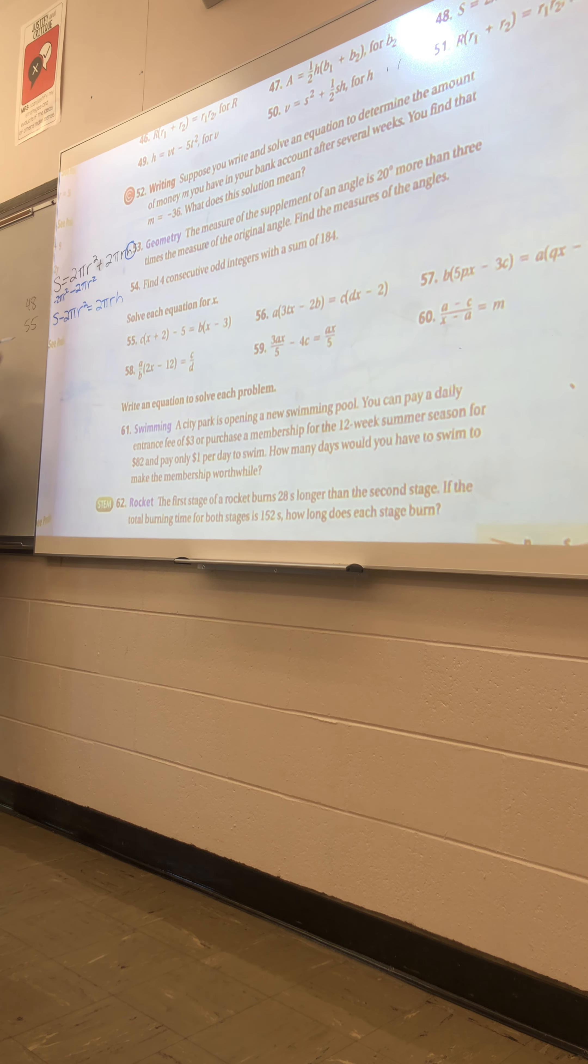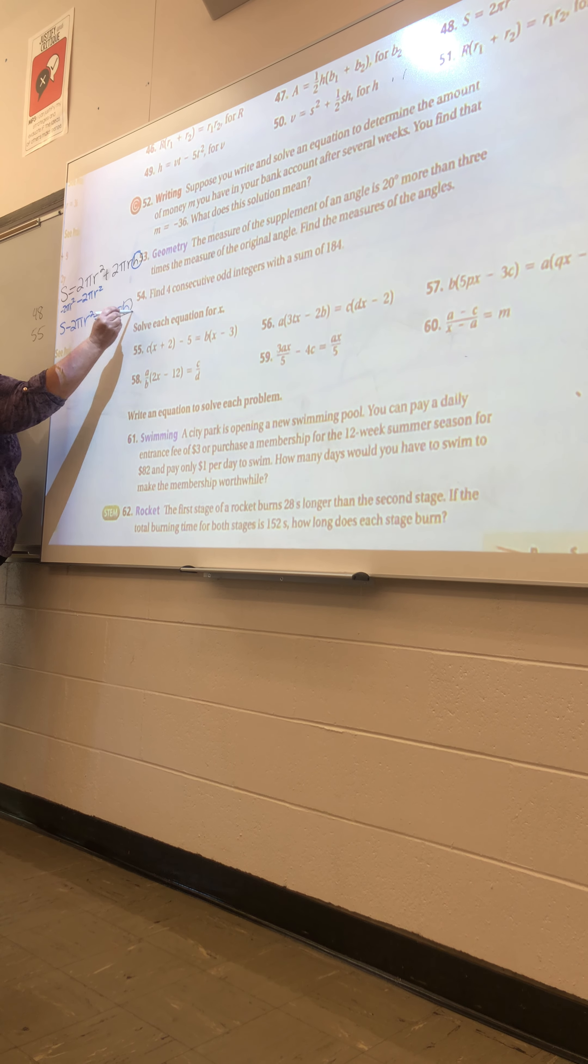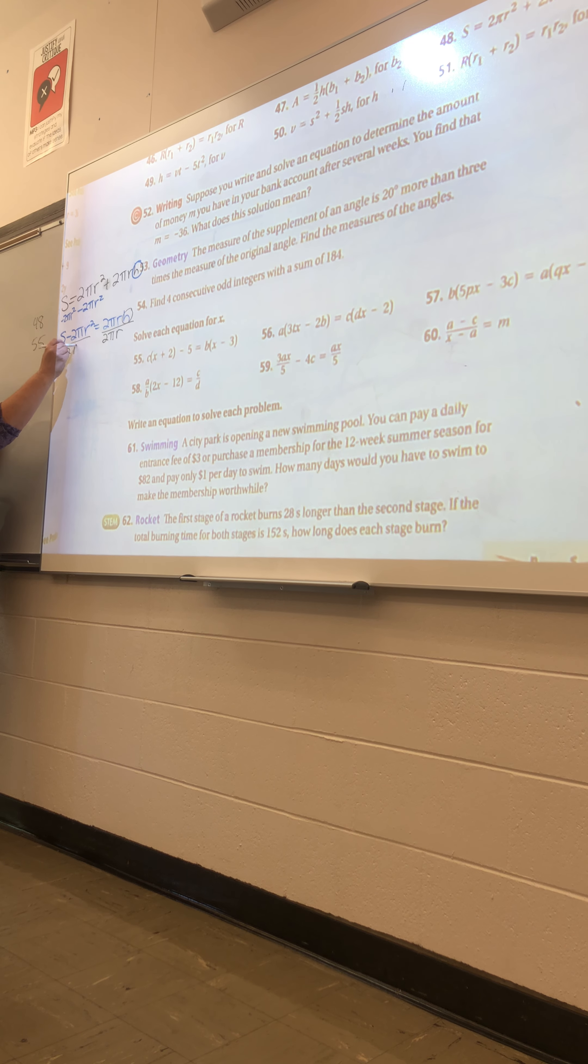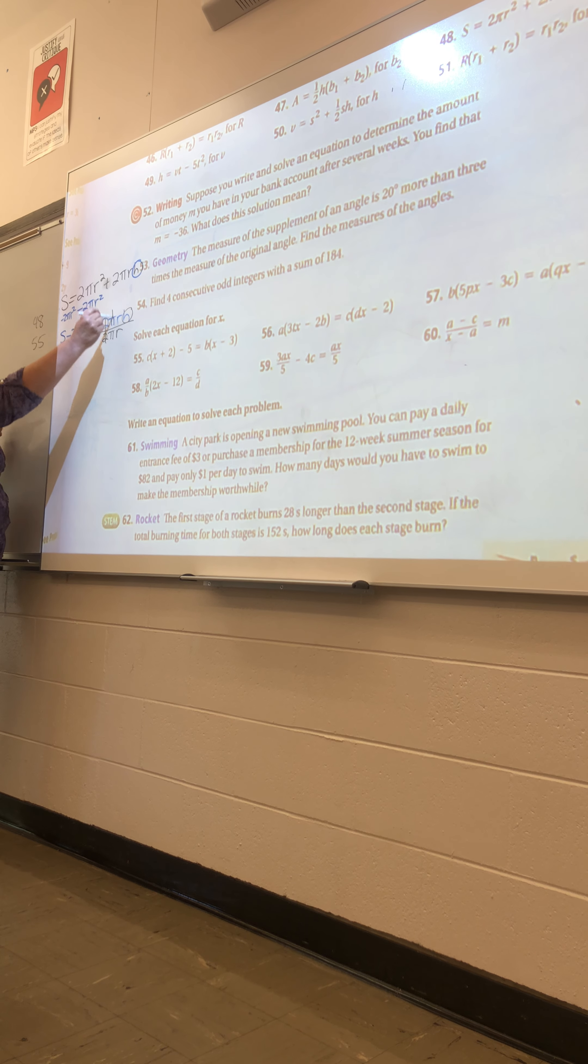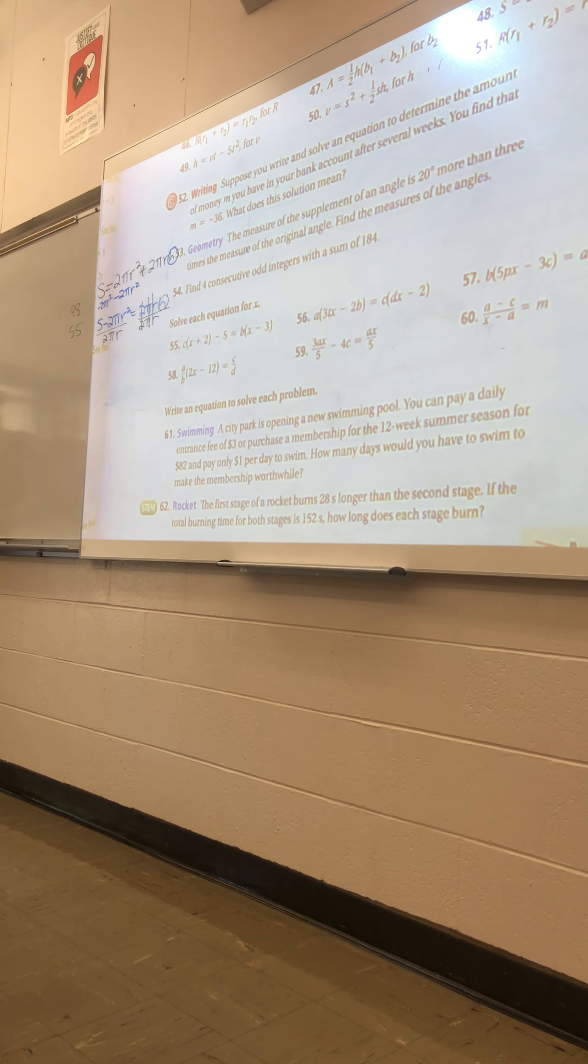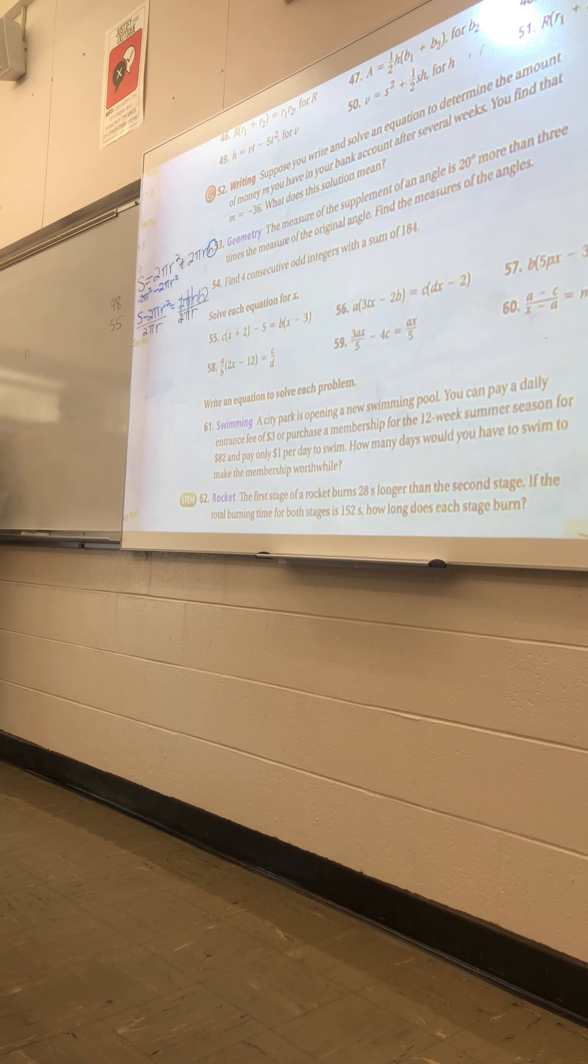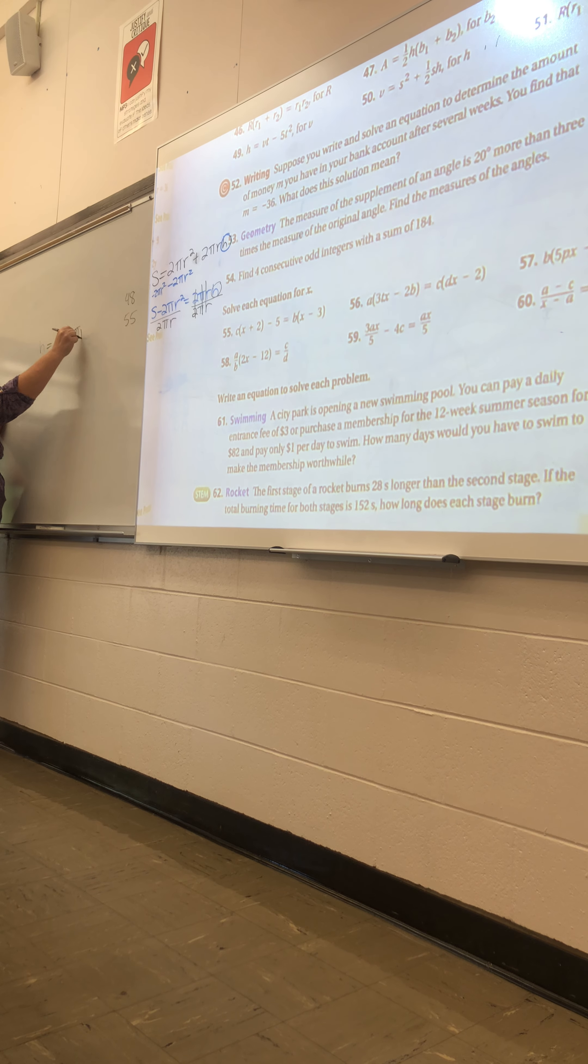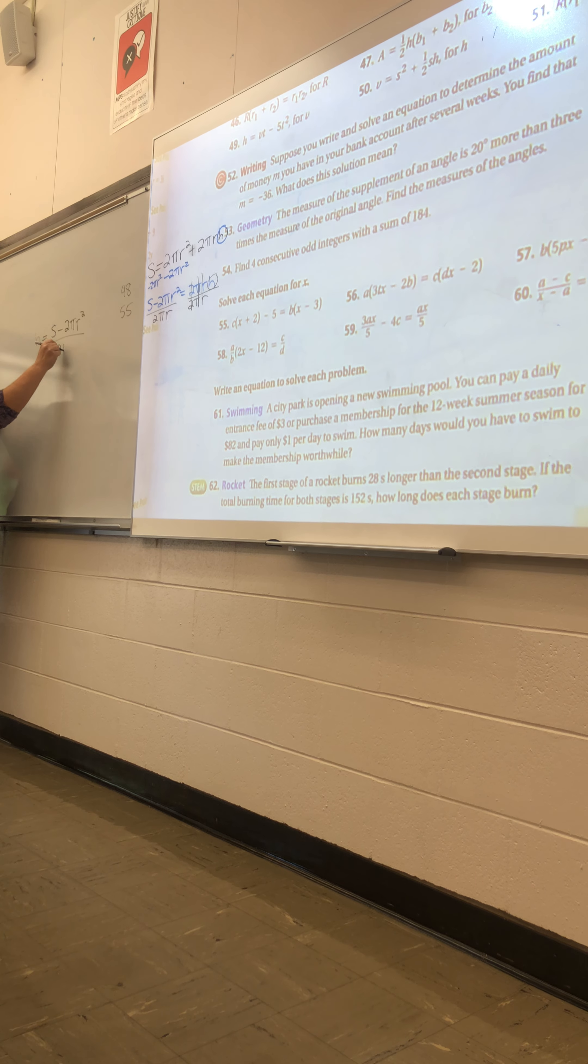And we're getting just h by itself, so we're going to divide off what we don't want, the 2 pi r. The 2 pi and the r cancel, and so your answer is h equals s minus 2 pi r squared over 2 pi r.